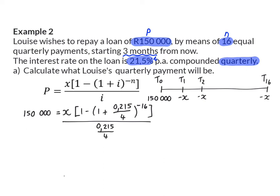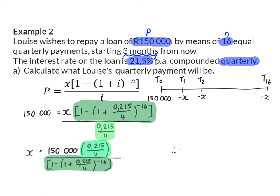And now we want to solve for x, the quarterly payment. To do that, I'm going to take the interest rate that is divided on the right and multiply with it on the left. And next I'm going to take the bracket that is multiplied to x and divide by that. This will then give us an amount of R14,212.35 that she has to pay every quarter.